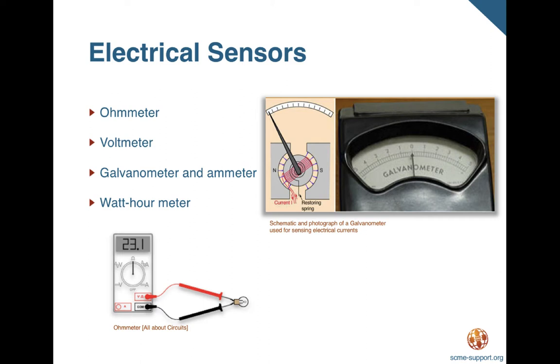Electrical sensors are sensors that measure changes in resistance, current voltage, or electrical energy. Examples of electrical sensors are ohmmeters which measure resistance, the voltmeter which measures voltage, the galvanometer and ammeter which measure current, and the watt-hour meter which measures the amount of electrical energy supplied to and used by a resident or a business.